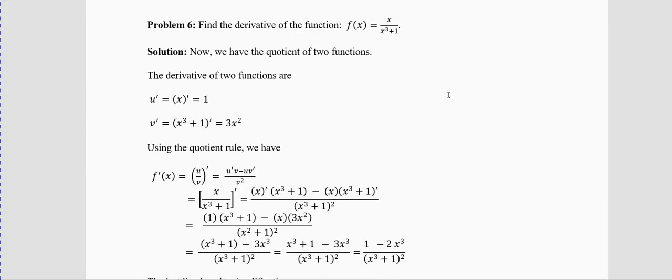Problem 6: Here we have a function where you are dividing something by something. The quotient rule is: (u/v)′ = (u′v − uv′) / v². Here u = x and v = x³+1 — what comes on top is u and what comes below is v.